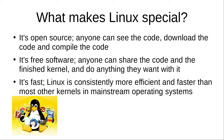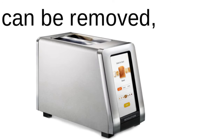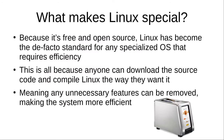And third of all, it's very fast. Linux is consistently more efficient and faster than most other kernels in mainstream operating systems. The reason it is so fast is because it's free and open source — Linux has become the de facto standard for any specialized OS that requires efficiency, because anyone can download the source code and compile it the way they want. Unnecessary features can be removed, making the system more efficient. For example, there's a smart toaster over here in the corner that's obviously running Linux, because the Linux kernel is open source and can be modified to be perfect for that toaster. It can run on everything from an embedded system to a supercomputer because it's so customizable.